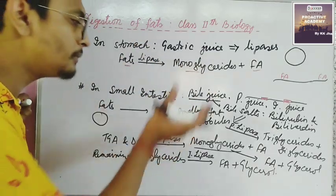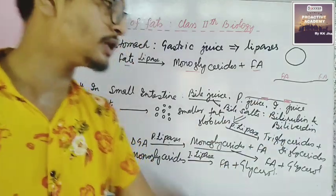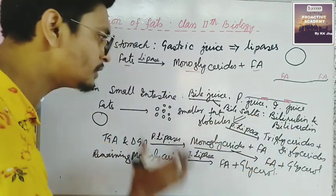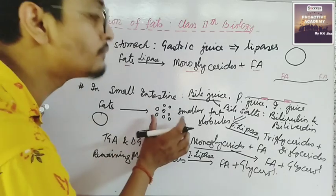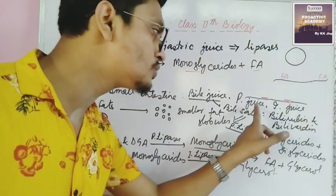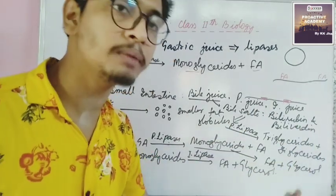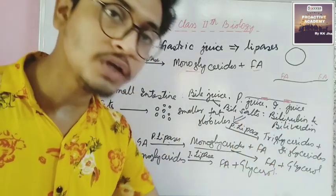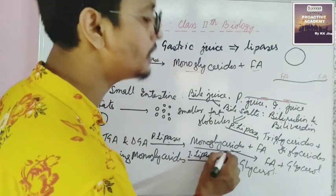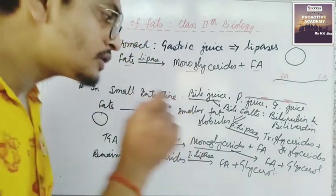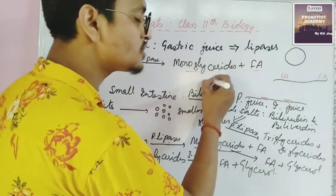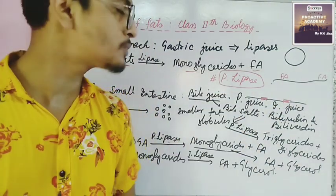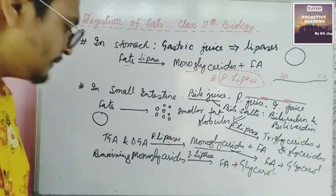The remaining food then comes to the small intestine. In the small intestine, bile juice, pancreatic juice, and intestinal juice (succus entericus) are present. Bile juice contains bile salts with bilirubin and biliverdin pigments, which break large fat molecules into smaller fat globules. Then pancreatic lipase acts on these, converting them to triglycerides and diglycerides, then to monoglycerides and fatty acids, and finally to fatty acids and glycerol. The principal fat-digesting enzyme is pancreatic lipase — not intestinal lipase.